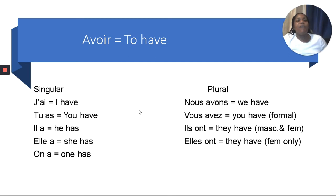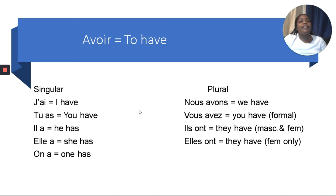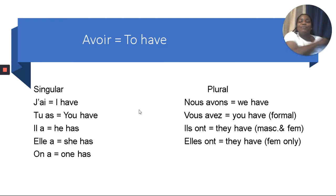Avoir — it's a verb, it's irregular. It means 'to have.' J'ai — I have. Tu as — you have. Il a — he has. Elle a — she has. Nous avons — we have. Vous avez — you all have. Ils ont — they have. Elles ont — they have. Avoir, it's a verb, it's irregular, it means 'to have.' Please don't mind my voice, but that song helps me to remember the verb avoir in the present tense.